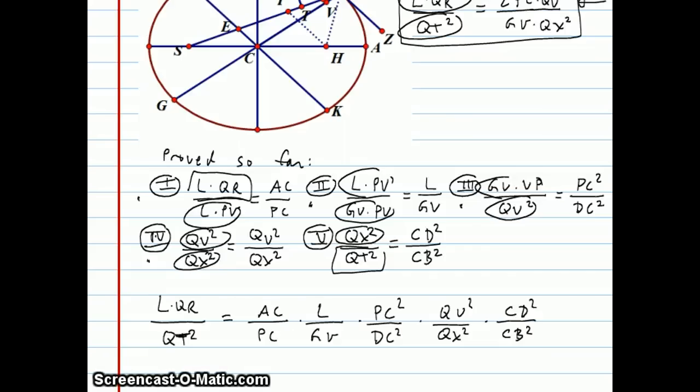Well, when I multiply all the left sides together, what happens is that everything is going to cancel out, and all we're left with is this: L times QR over QT squared.